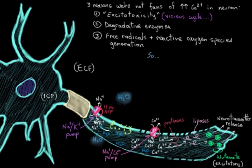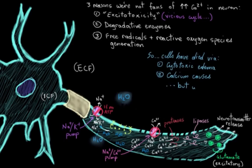So I described cells dying by cytotoxic edema and by calcium-dependent mechanisms. But there's also another important way that neurons can die after a stroke.